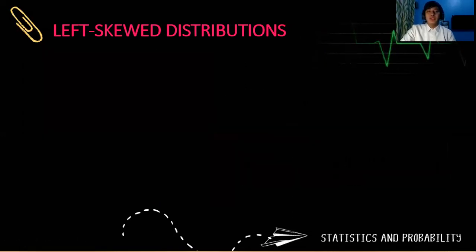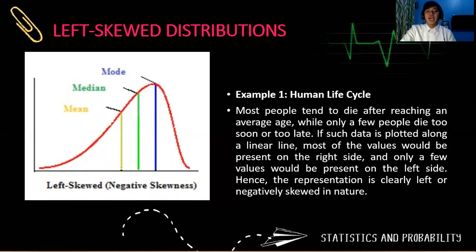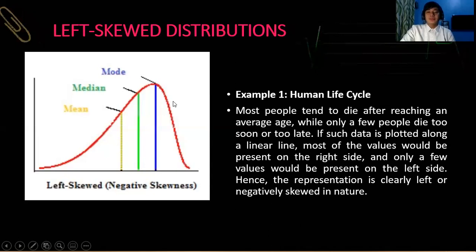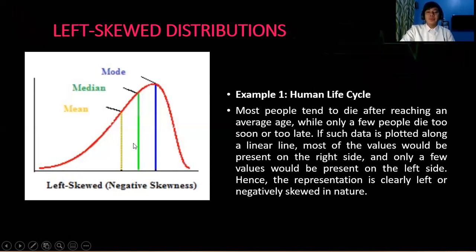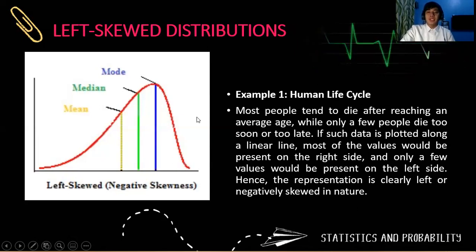So examples of left-skewed distribution are most people tend to die after reaching an average age. Only few die too soon or too late. So if you are younger, then you are part of the left tail. But as you age, then the higher the chance that you die. So if such data is plotted along the linear line, most of the values would be present on the right side. So there is higher probability of dying as you get older. Hence, this representation is clearly left or negatively skewed in nature, and that talks about the human life cycle.